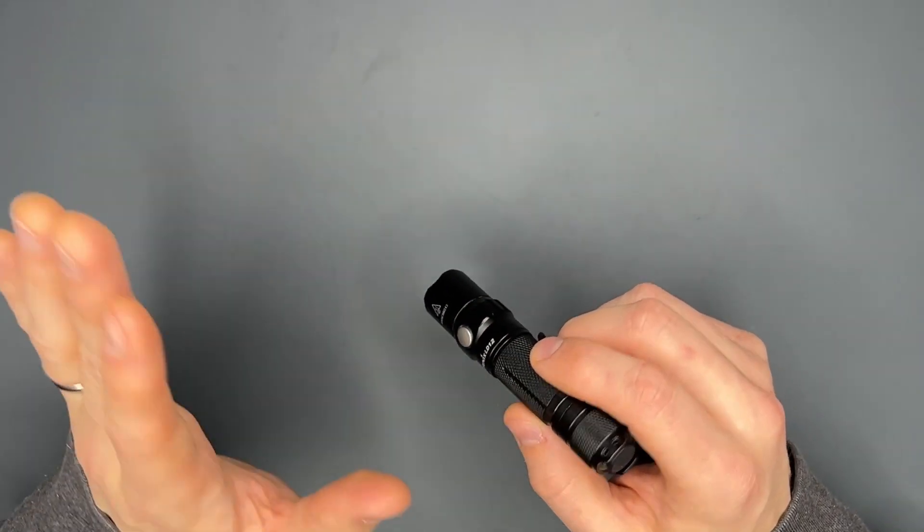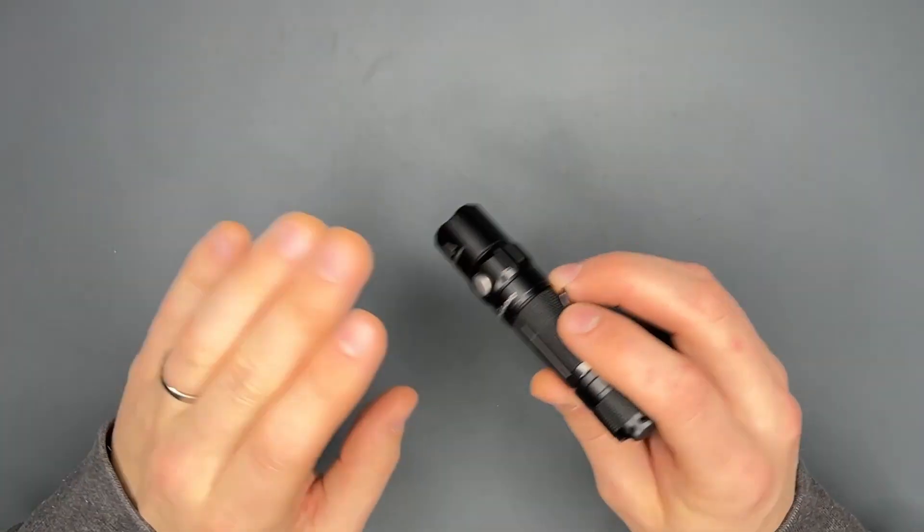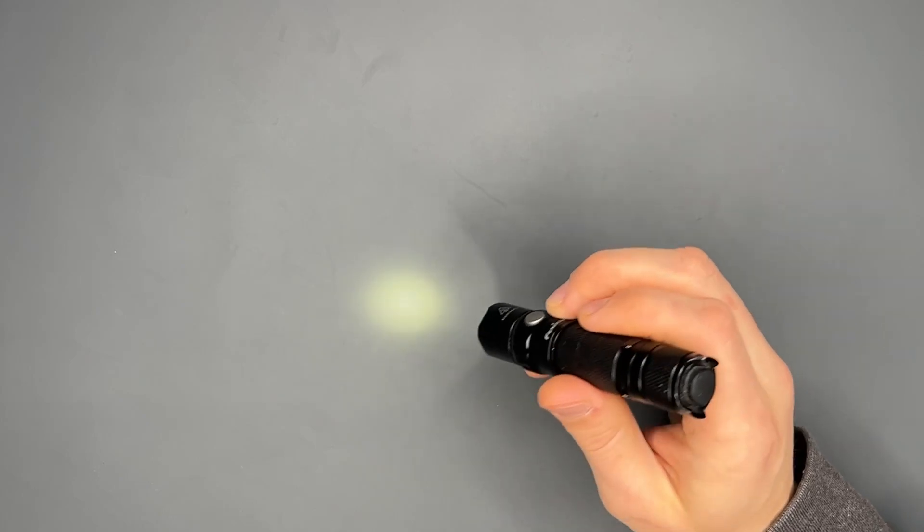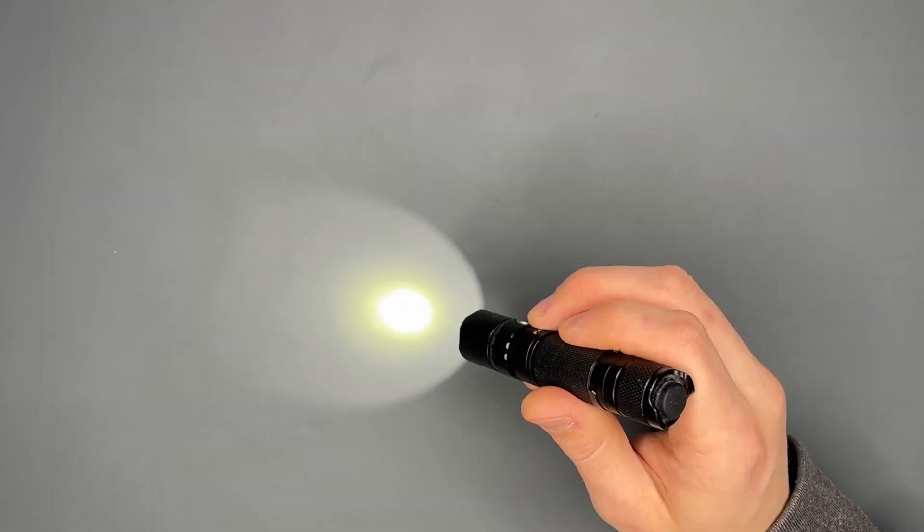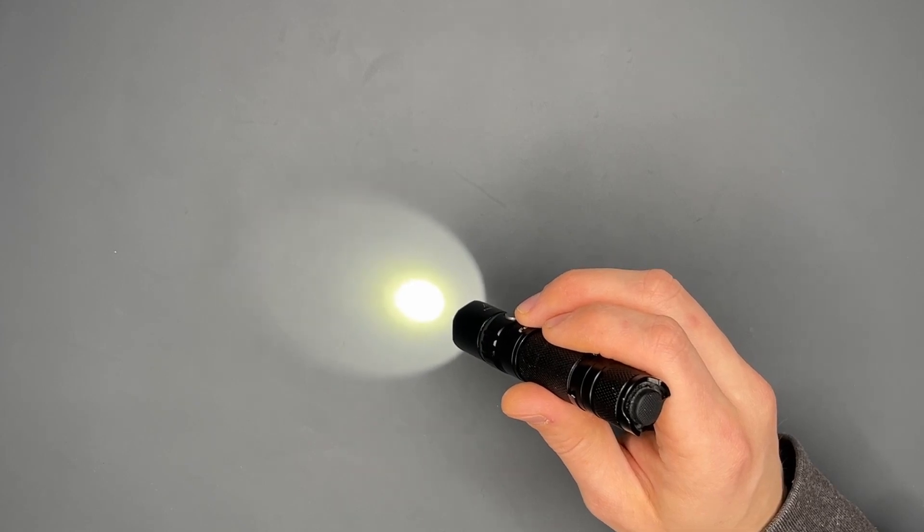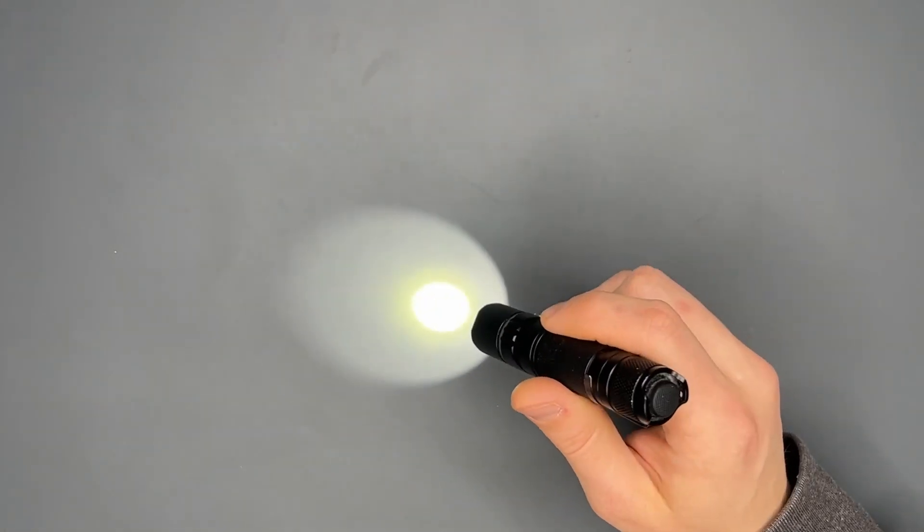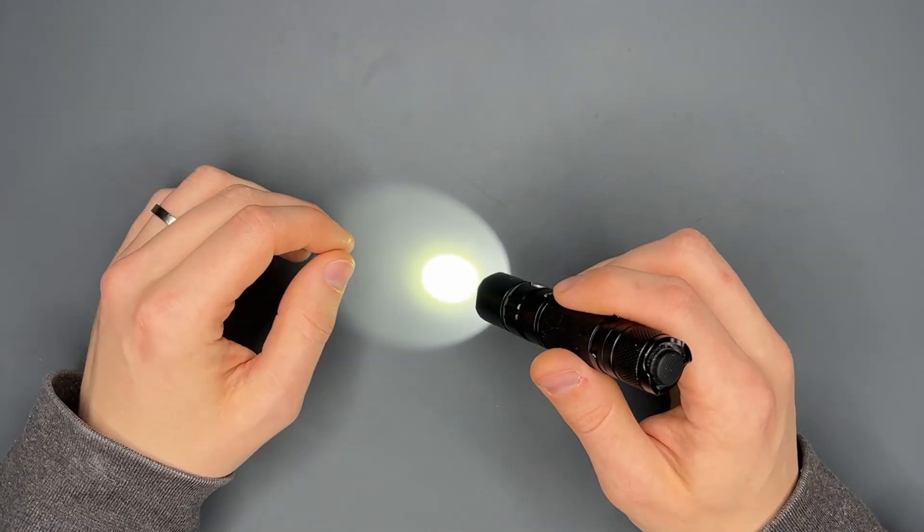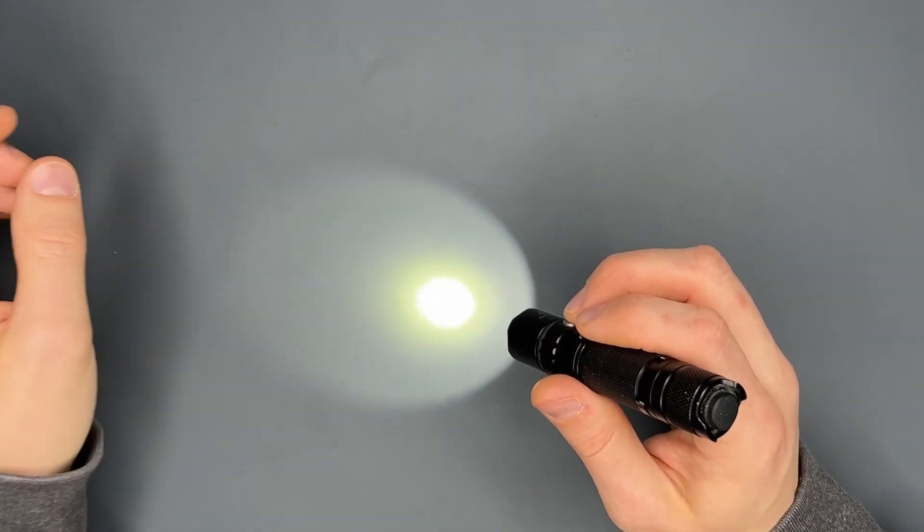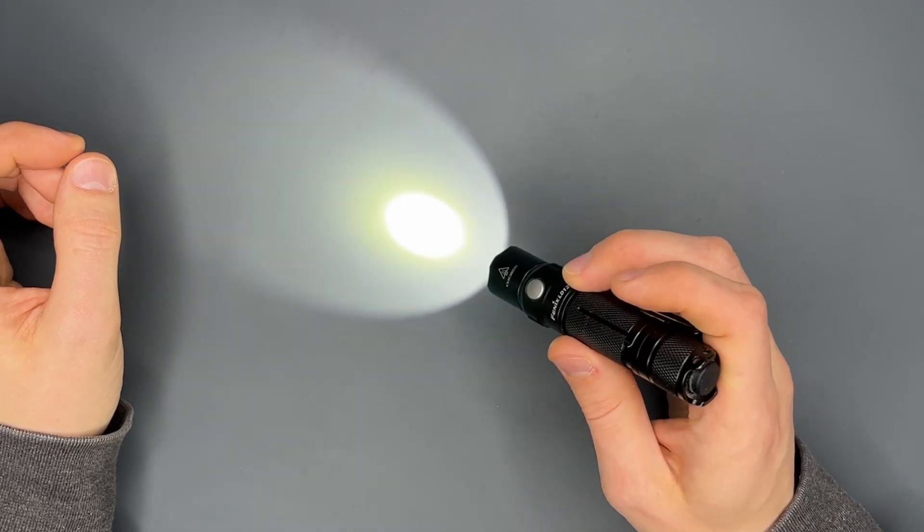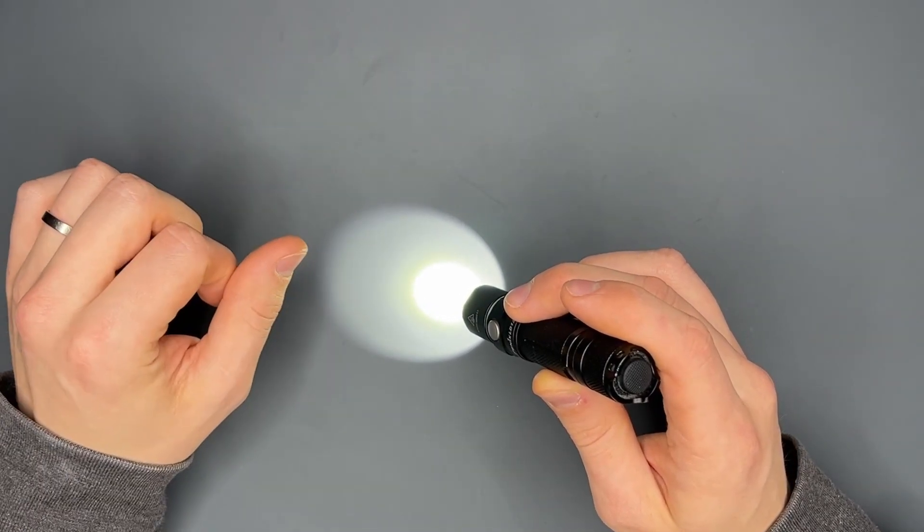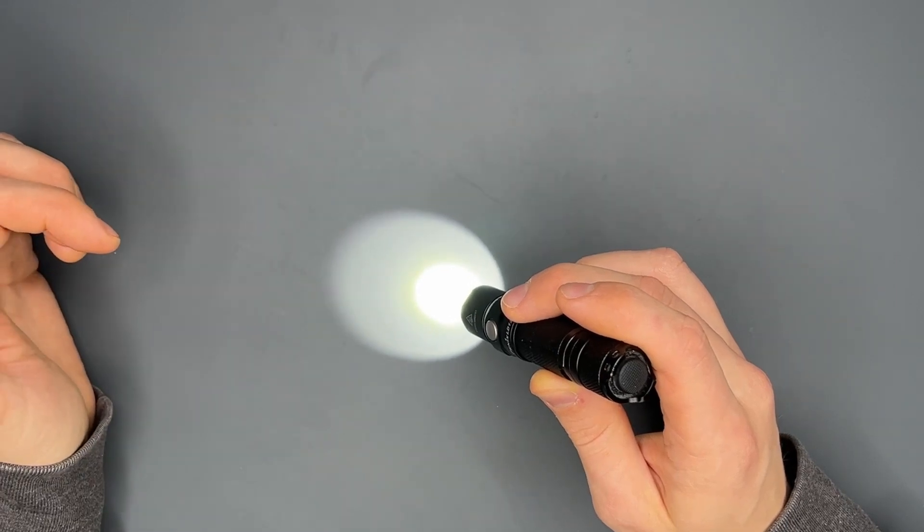On low you have five lumens and you get around 50 hours. On medium you'll get 30 lumens which will last you about 10 hours. On high you get 70 lumens which will last you five hours.